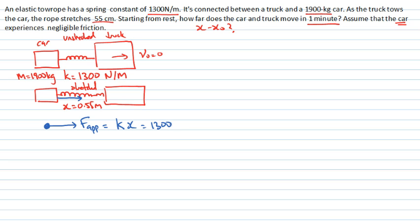So that's that 1300 newtons per meter multiplied by 0.55 of a meter, which gives me 715 newtons. That's the applied force. Are there any other forces acting on the car? Well, yes, the car has some mass and it has a normal force, but those two forces are equal in magnitude and opposite in direction, but not action-reaction pairs. And we're also told to assume that there's negligible friction. So there's no other force acting to the left, that's the only force which is acting on the car.